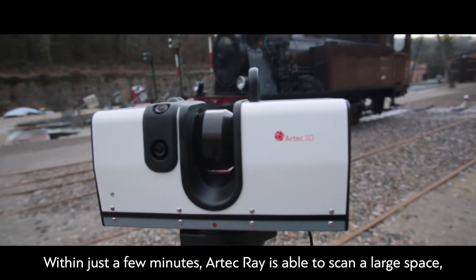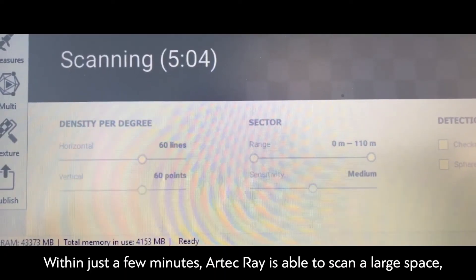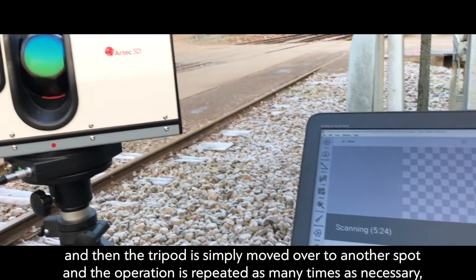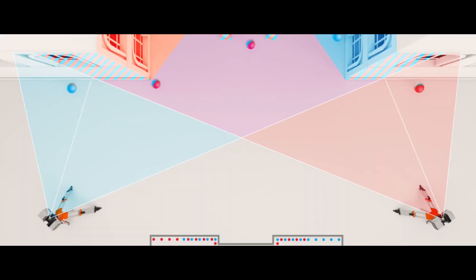Within just a few minutes, Artecray is able to scan a large space, and then the tripod is simply moved over to another spot, and the operation is repeated as many times as necessary, so that all the dead zones are scanned by Ray's laser beam.